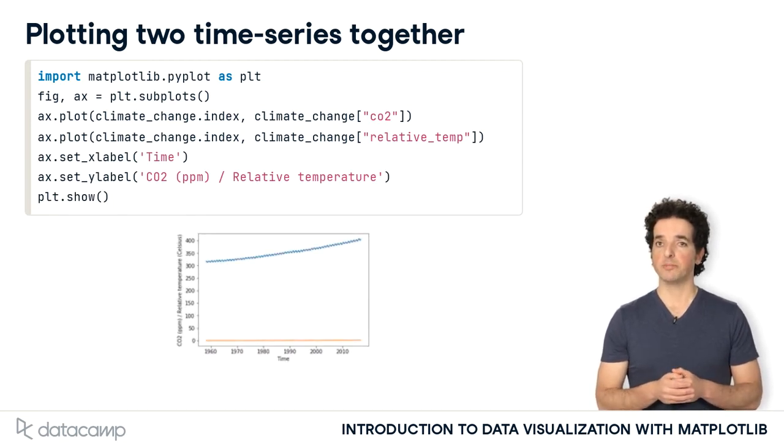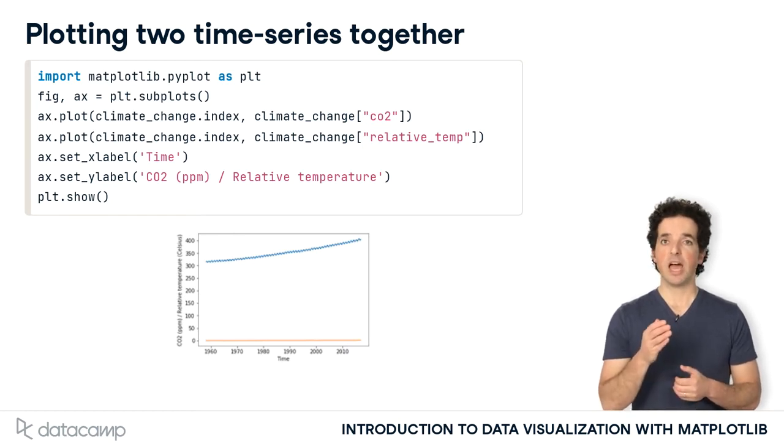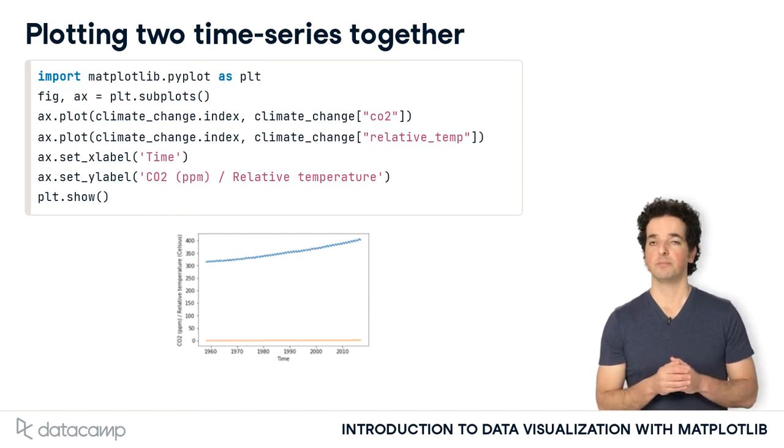But this doesn't look right. The line for carbon dioxide has shifted upwards, and the line for relative temperatures looks completely flat. The problem is that the scales for these two measurements are different.